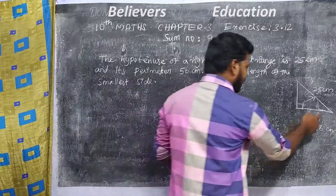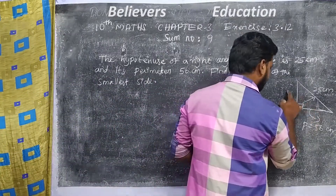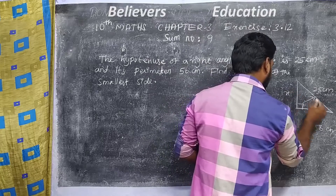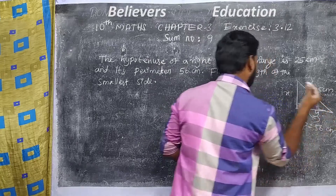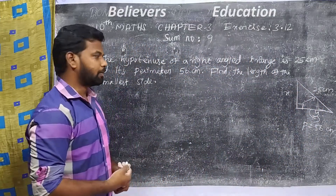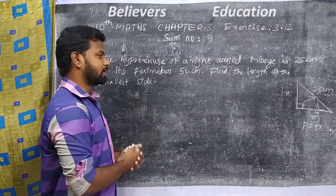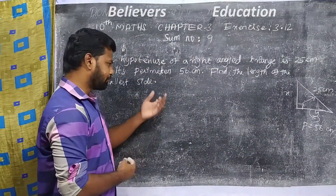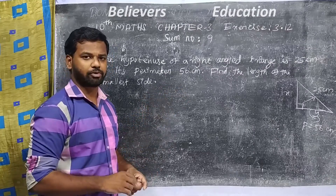If you look at the unknown lengths, we have x and y. Looking at the condition of the right angle triangle, the value of x plus y is what we need to find.